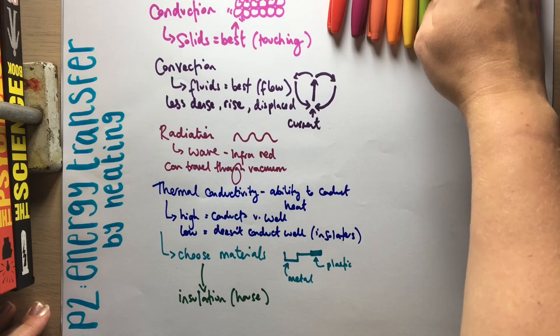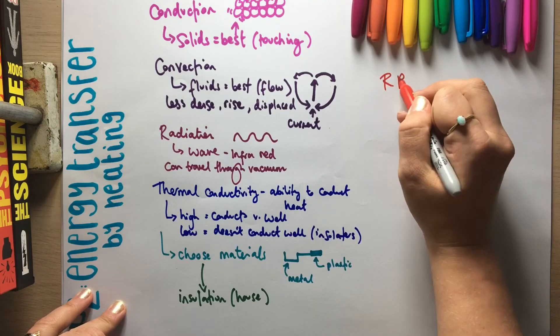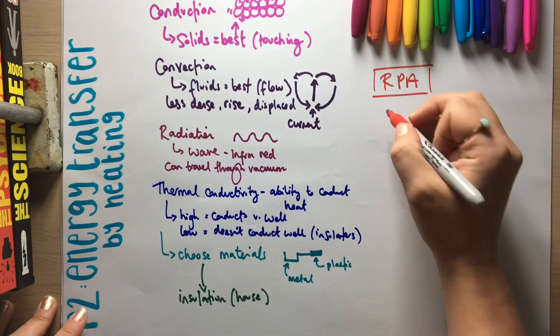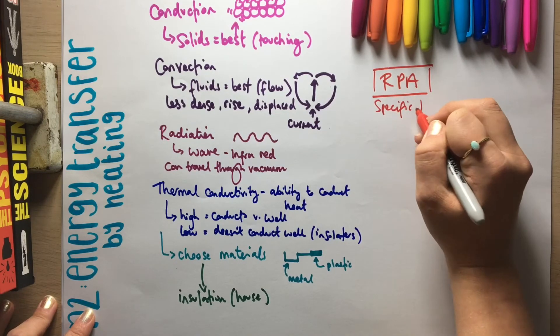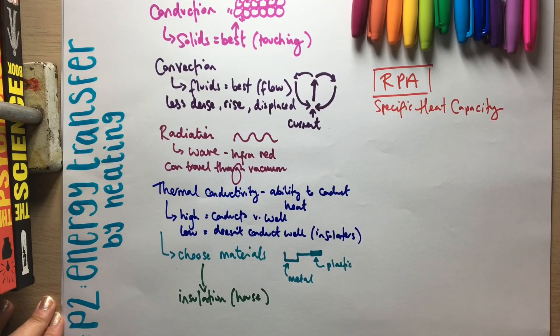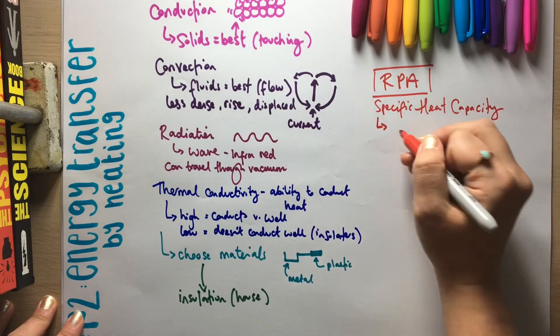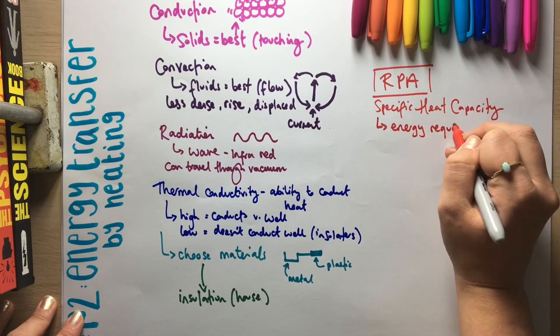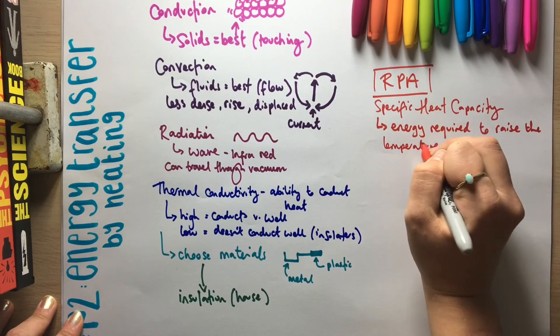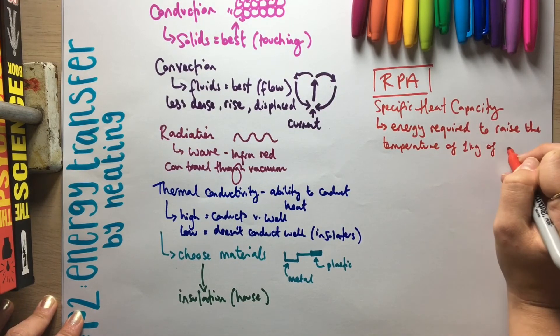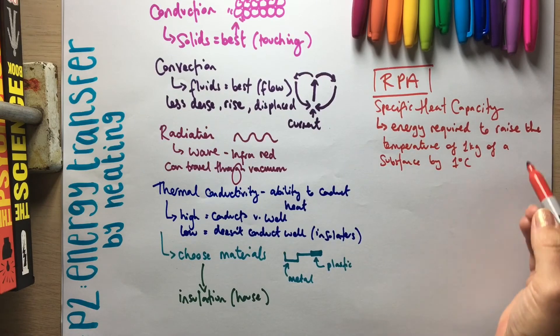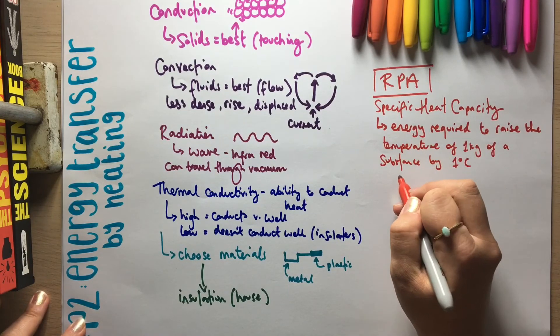The other thing that comes up in this topic is it has a required practical. And I'm not going to spend ages on this because there's a whole other video on just the RPA. So it's more just kind of doing a little recap. So the RPA is for specific heat capacity. So how to find the specific heat capacity of a material, usually a metal. So first of all, you need to know the definition of specific heat capacity. And this is the energy required to raise the temperature of one kilogram of a substance by one degree Celsius. So you are expected to know this definition, particularly if you're on the higher paper.